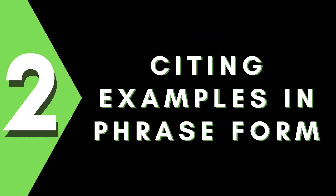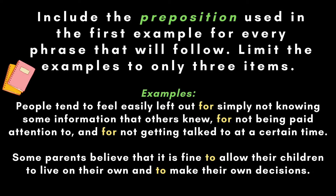The next common error is committed when a writer is citing examples in phrase form. To maintain parallelism, always include the preposition used in the first example for every phrase that will follow. As much as possible, limit the examples to only three items. If there's a need to add more, write them in a separate sentence. Here are examples: "People tend to feel easily left out for simply not knowing some information that others knew, for not being paid attention to, and for not getting talked to at a certain time."